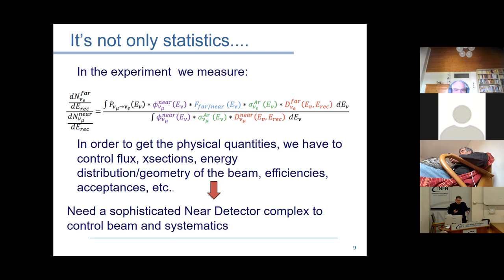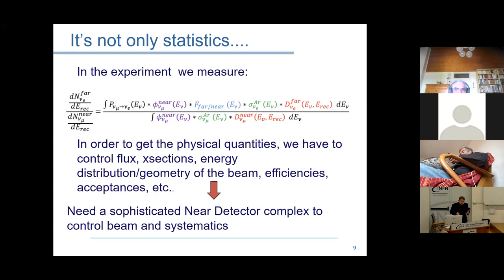You have to get smart and try to make the near and far detectors as similar as possible, using the same material so that to first order you factorize the part you don't know. But only to first order — because the neutrino after 1,300 km is totally different from what you see near the target. You need to measure very well the neutrino energy, flux, and direction. The near detector is the name of the game.